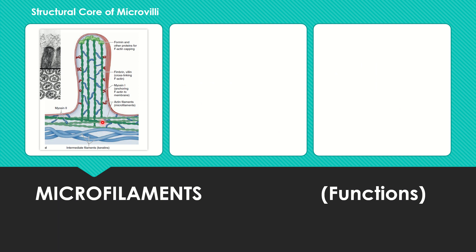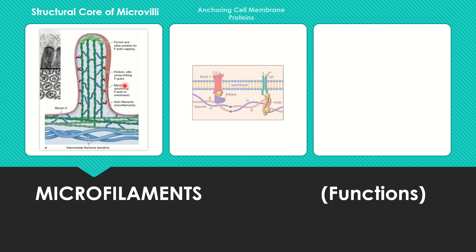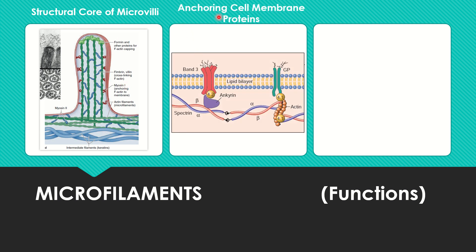Actin also forms the structural core of microvilli. Each microvillus has a structural core made up of actin, and microvilli help in the absorptive functions of the cell. Additionally, actin anchors cell membrane proteins; for example, in the RBC membrane, spectrin and actin together anchor the membrane proteins.